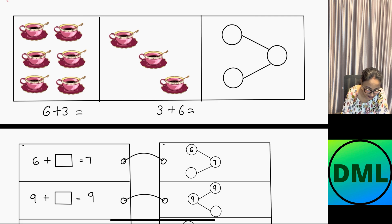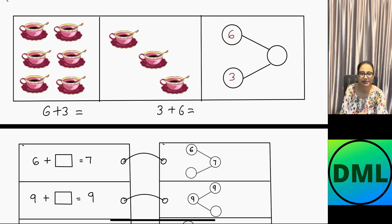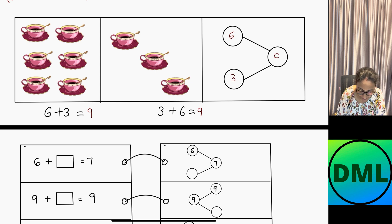Let's see the next example. We have 1, 2, 3, 4, 5, 6 cups and 3 cups on the right side, so we are adding 6 plus 3. Since 3 plus 6 is the same, I'll write 6 and 3. Then counting on from 6: 7, 8, 9. The answer is 9. We are adding 6 plus 3, so I write 6 here and 3 here, and the answer equals 9.